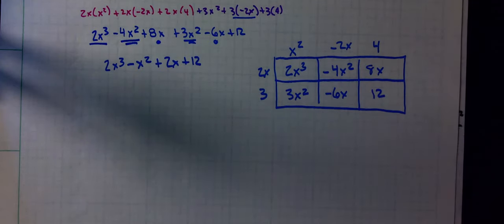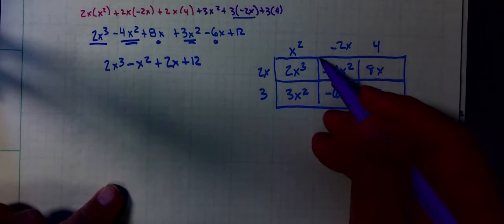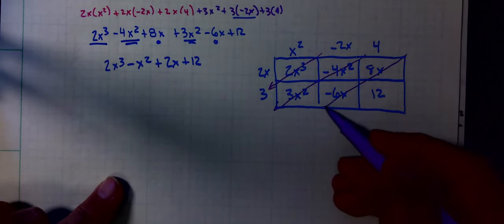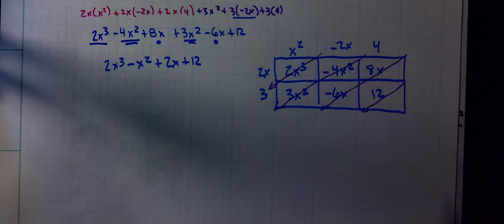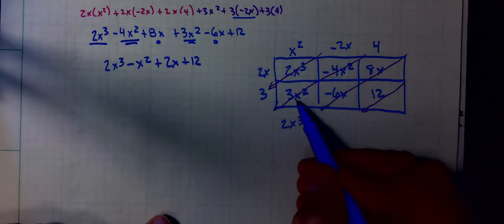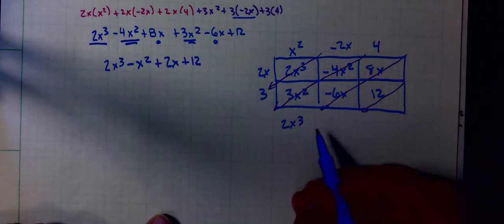Notice I did the exact same 6 multiplications that I did previously. Now what we're going to do is we are going to add along diagonals. We're going to come up with our answer. So I have 2x cubed, 3x squared minus 4x squared is negative x squared, 8x minus 6x is 2x, plus 12.